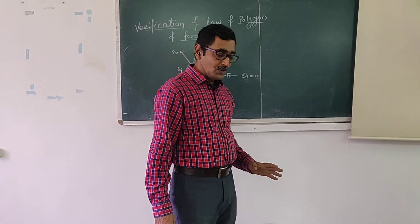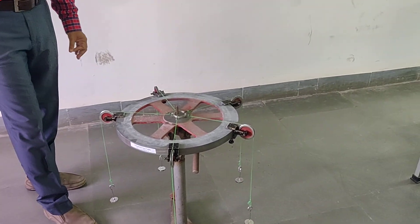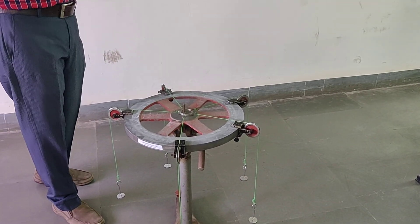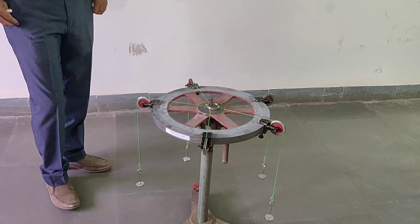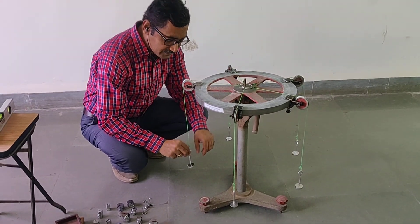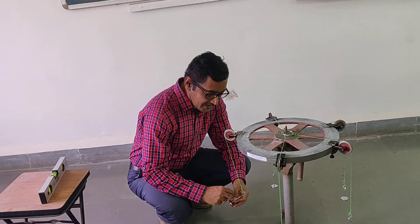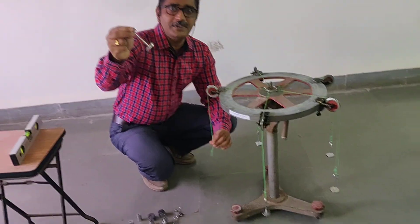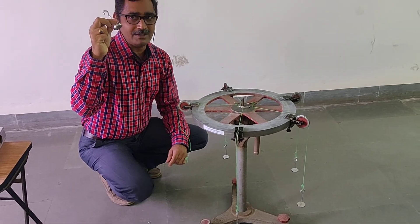I am applying the forces here by using this thread and the pulley, and I am creating this force system which keeps the ring in equilibrium. At the end of this thread there is one hook, and at the end of the hook this weight is applied. This weight including the weight of the hook is a total of 50 grams.